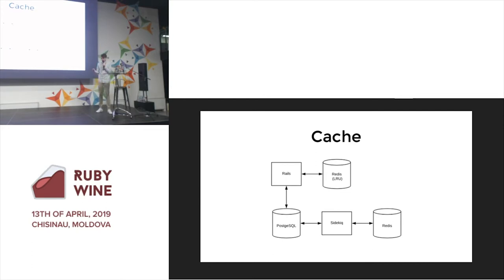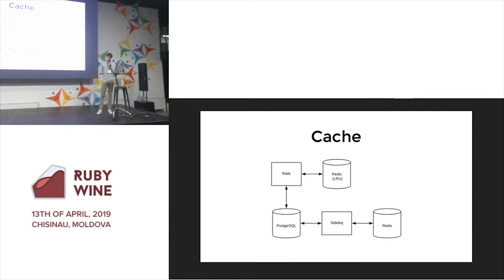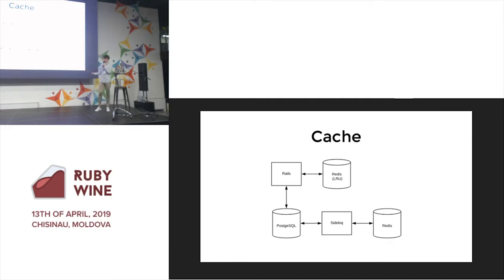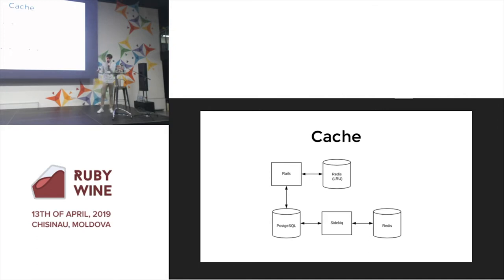On the next step, you probably start thinking about cache, because your application continues to grow with more users and more data. You start caching queries, pages, and other things. This again makes the application more complex, because when you deploy, you also need to reload the cache, which means more time to release a new version of your monolith.